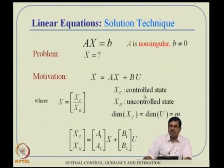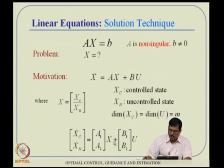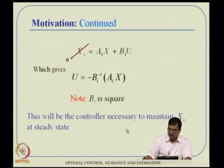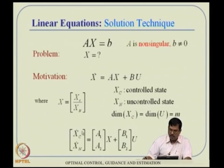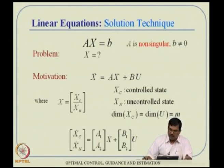Consider a typical equation x_dot = Ax + Bu. We divide x into a controlled state x_c and an uncontrolled state x_n, such that the dimension of x_c equals the dimension of u. Taking the upper portion of the equation: x_c_dot = A1*x + B1*u, where B1 is now a square matrix. We find the equilibrium condition where x_c_dot = 0, which is a forced equilibrium point requiring non-zero control activity.